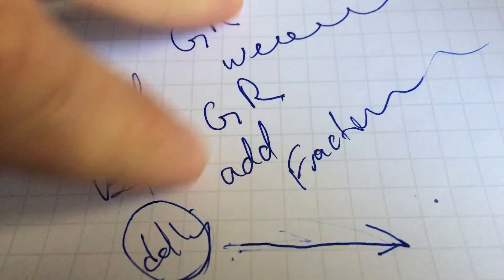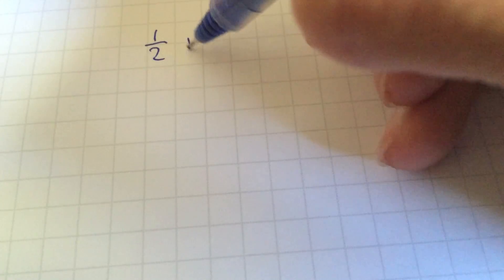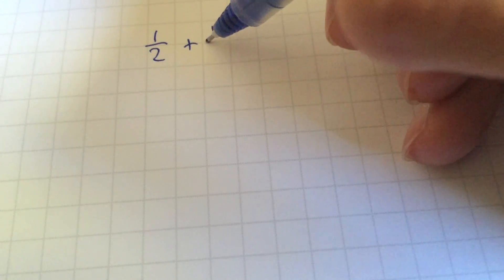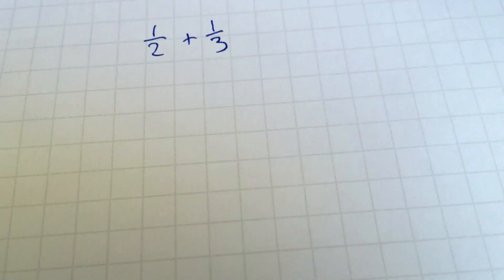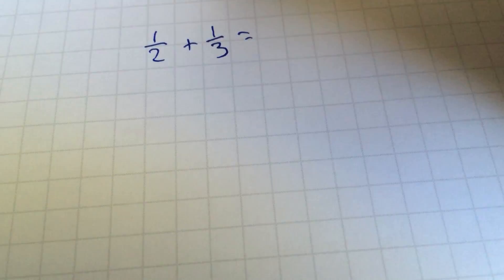So let me show you guys how to do some fractions — adding fractions with uncommon denominators. One half plus one over three. Let's start with that.